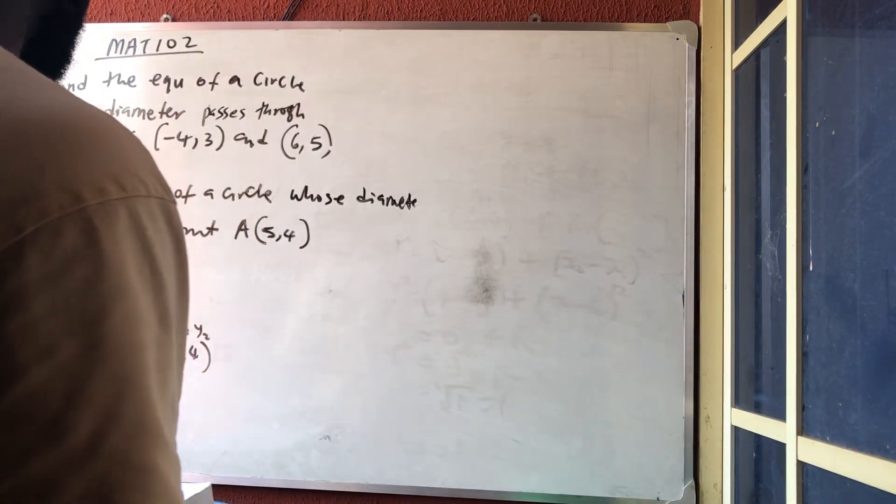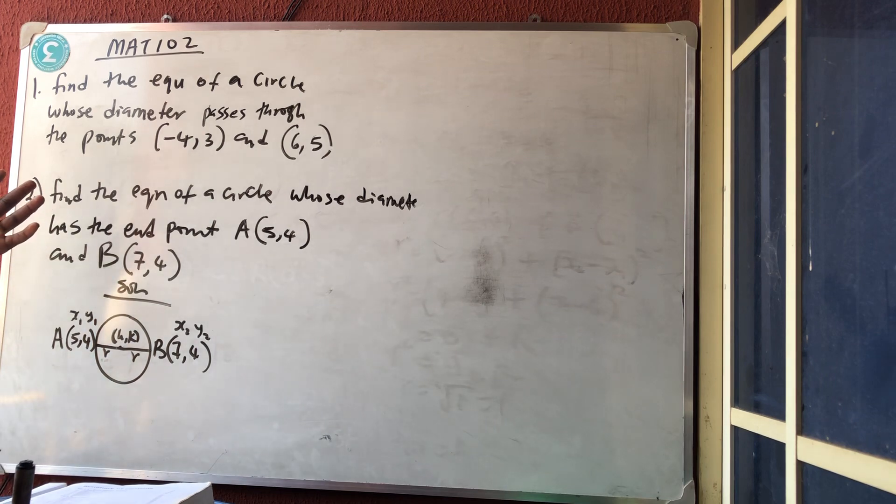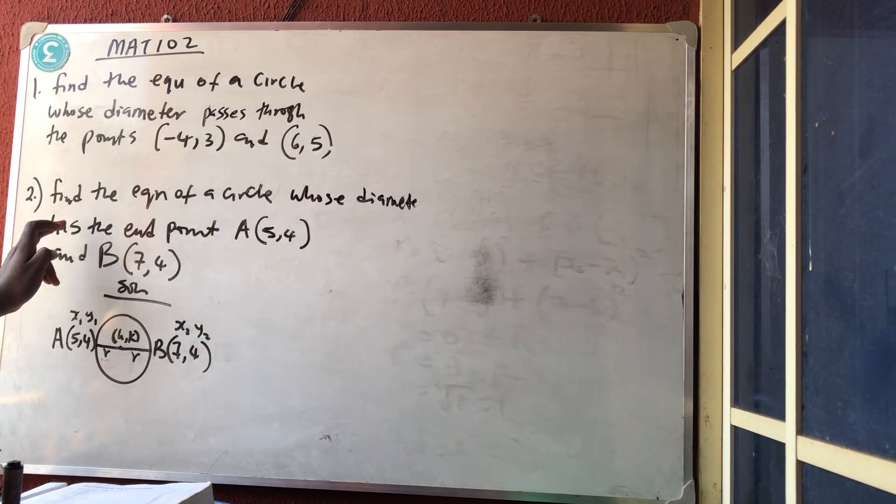Good afternoon and welcome to Master Talker online class. Today we'll be solving this simple question someone gave us on circle. Let's start from number two. Number two said find the equation of the circle whose diameter has the endpoints (-4,3) and (6,5).